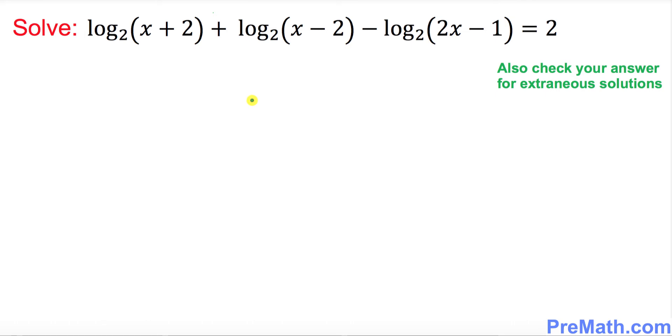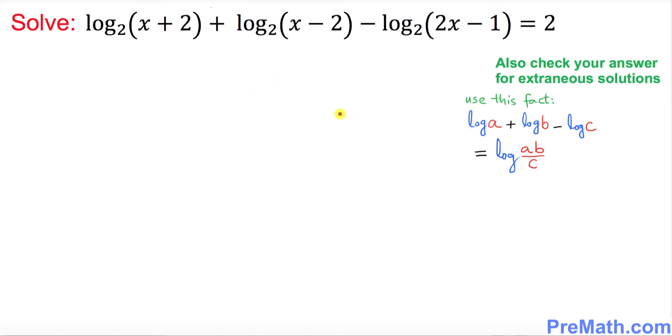So let's go ahead and simplify this big long problem by using this fact. We're going to compress this problem. What this fact says is wherever you see a plus sign you convert into multiplication, whenever you see a minus sign that corresponds to division.